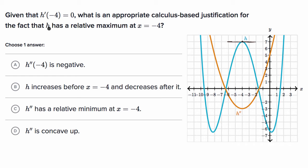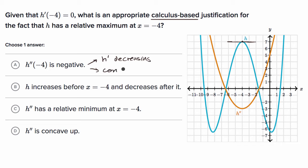Given that, what is a calculus-based justification for the fact that h has a relative maximum at x equals negative four? The first choice says that the second derivative at x equals negative four is negative. What does that tell us? If the second derivative is negative, that means the first derivative is decreasing, which means we are dealing with a concave downward situation at x equals negative four. The general shape of our curve looks like an upside-down u around x equals negative four, and if the slope there is zero, we are indeed dealing with a relative maximum point.